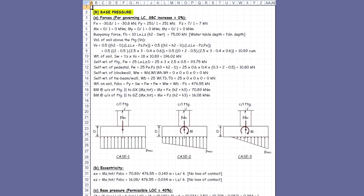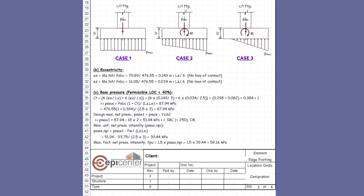The first design check is for base pressure. If the governing load combination involves SBC increase, then support reactions are adjusted accordingly. This is followed by calculations for buoyancy, soil volume, soil weight, and other loads — some of these being zero for the pipe rack footing. We finally arrive at the total vertical load and bi-axial moments under the footing. Figures show the possible scenarios for base pressures in the two directions. This is followed by eccentricity calculations. If one or both eccentricities exceed the corresponding Kern distance, the maximum base pressure gets modified according to Teng's chart for permissible LOC, thus giving us the design maximum net pressure to be compared with soil SBC.